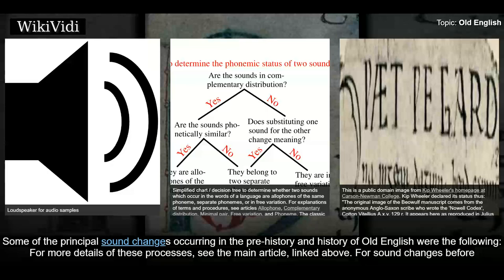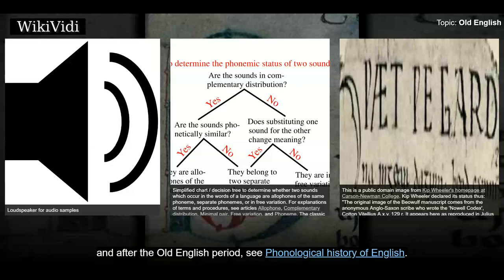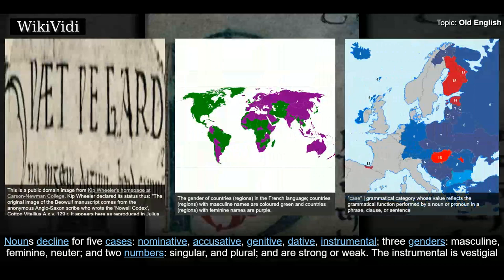Some of the principal sound changes occurring in the prehistory and history of Old English are documented in the main article on Phonological History of Old English. For sound changes before and after the Old English period, see Phonological History of English.